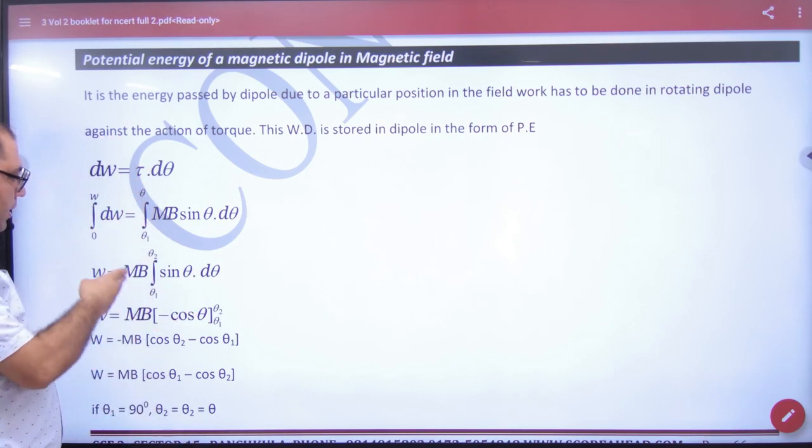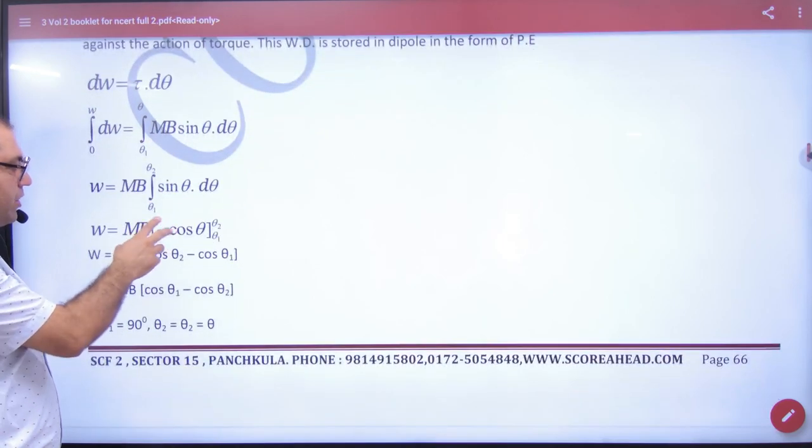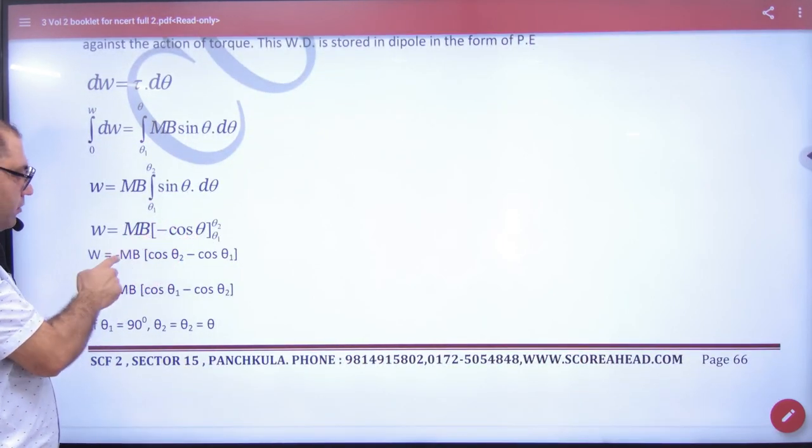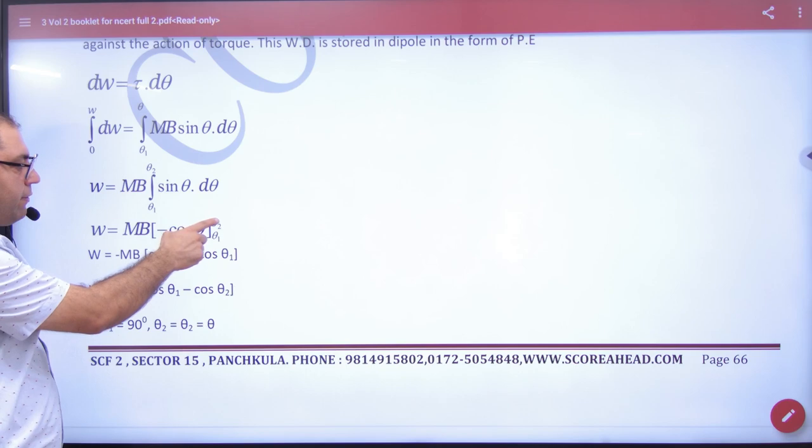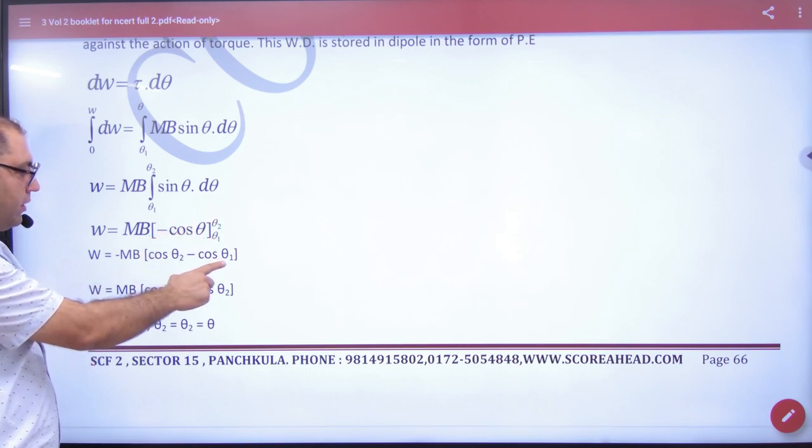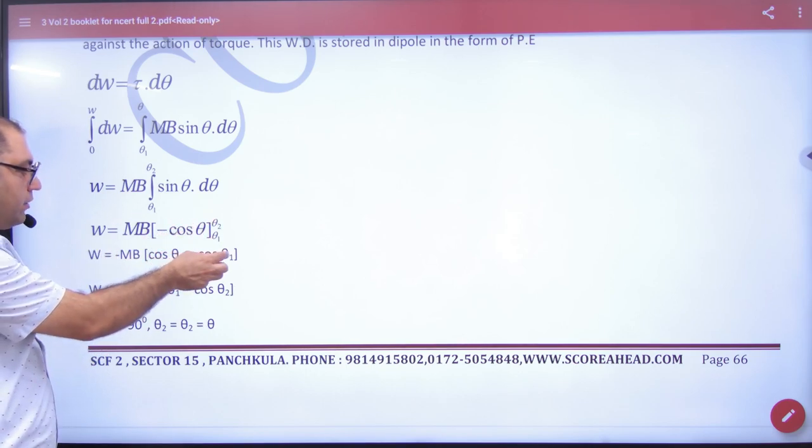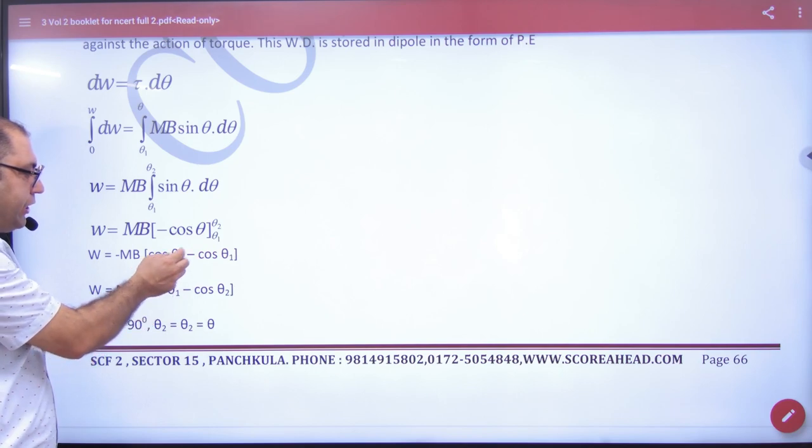Theta2 is this. So, mb is outside the integral. Integral of sin is minus cos, so we get minus. Theta2 gives minus, minus minus for theta1 becomes plus, so we get cos theta1 minus cos theta2.